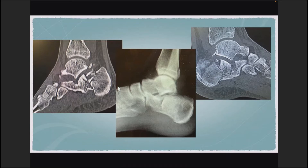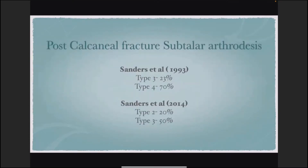What is the incidence of subtalar arthrodesis in these fractures? Sanders in his 1993 paper said that about one in five type 3 and 70 percent of type 4 fractures ended up getting subtalar arthrodesis. However, when he revisited his patients after 10 to 20 years of follow-up, the numbers had increased significantly — now including one in five type 2 and nearly 50 percent of type 3 fractures.